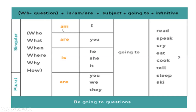Then you use the WH words first, then the verb to be — is, am, or are. For I, use am. For you, use are. For he, she, it, use is. For you, we, they, use are. Then the helping verb going to, and then the infinitive — the base form of the verb: read, speak, fry, eat, cook, tell, sleep, cut. That's the structure — esa es la estructura para hacer WH questions utilizando going to.